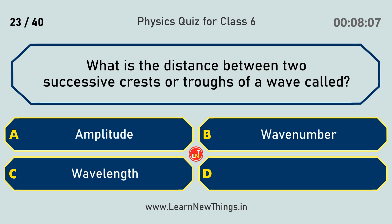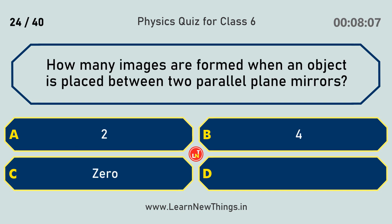What is the distance between two successive crests or troughs of a wave called? Wavelength. How many images are formed when an object is placed between two parallel plane mirrors? Infinite.